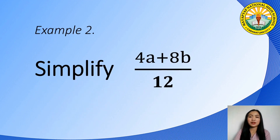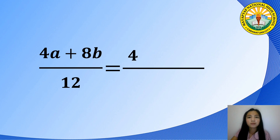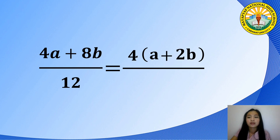For example number 2, let us simplify 4a plus 8b all over 12. The first step is to factor both the numerator and denominator. Remember factoring by GCF. In the numerator, the greatest common factor of 4a plus 8b is 4. Factor out or divide out the GCF for each term: 4a divided by 4 equals a, and 8b divided by 4 equals 2b. The factor of the denominator 12 is 4 times 3. So the factors of 4a plus 8b are 4 times (a plus 2b), and the factors of 12 are 4 times 3.